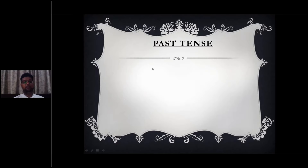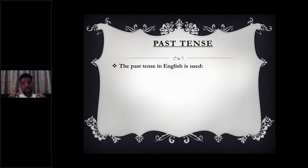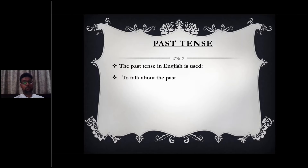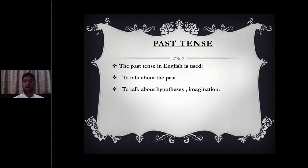Now, the past tense in English — why is it used, and how is it used in relevance to the Occupational English Test? Whenever we discuss any grammatical aspect of English, we are emphasizing the OET examination. So what relevance does the past tense have for OET? It is used to talk about the past — happenings or events that occurred in the past. Secondly, to talk about a hypothesis or imagination.